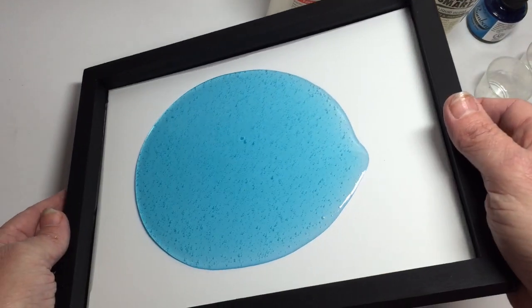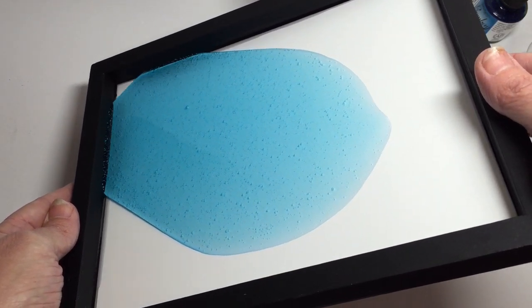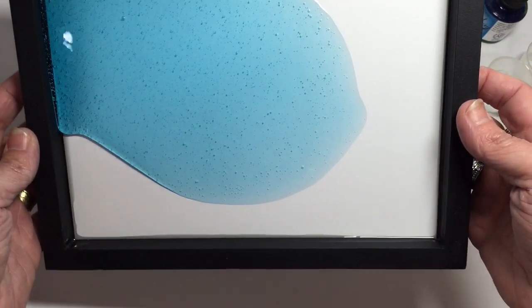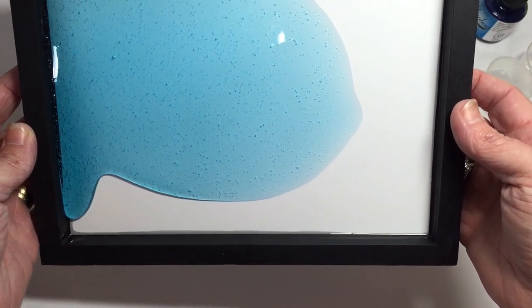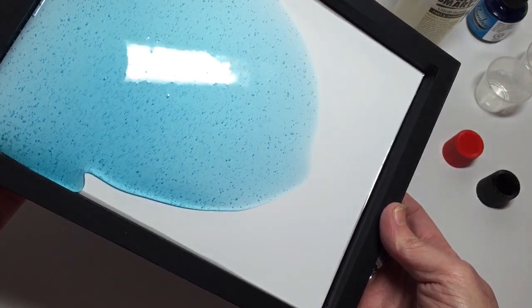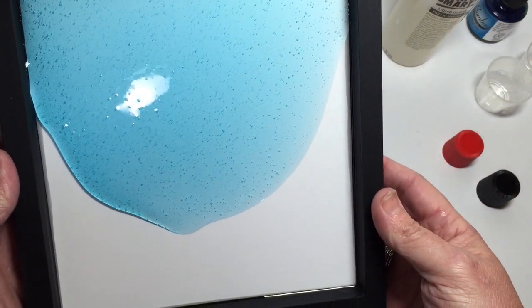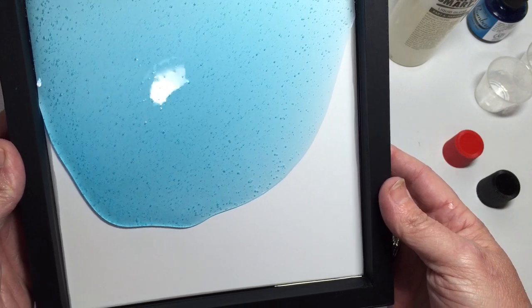Next we tilt our frame or whatever vessel you're using until the resin fills every corner. And you can see as I spread this layer of resin out that the blue is becoming a paler shade of blue.